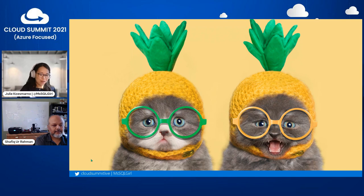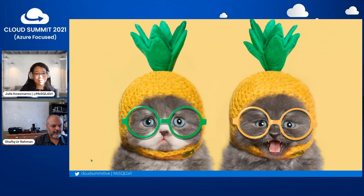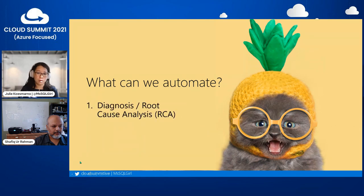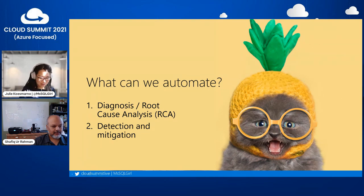To summarize what we've covered: troubleshooting guides can be a way to improve your incident response by rethinking how you approach them using software engineering practices. Think of troubleshooting guides as software artifacts, using Jupyter notebooks, and build up the executable-to-reusable-to-automatable pipeline. Next, let's talk about what we can automate — specifically the two types: diagnosis and detection and mitigation. I'll let Shafiq elaborate on the automation aspects we've thought about and implemented in TSG ops.